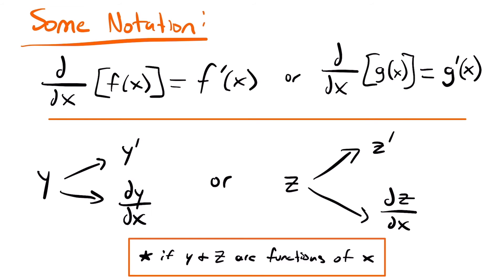Now let's go over some notation you may see regarding derivatives. So far we've used the d/dx form with the expression in brackets. But you'll also come across the f prime notation. When we take a derivative of a function f of x, we denote that derivative as f prime of x, which is the derivative function of f of x.